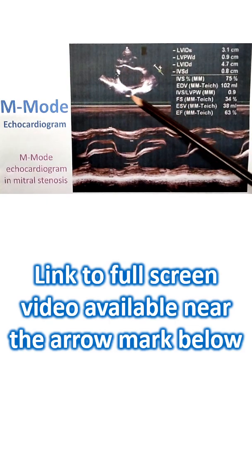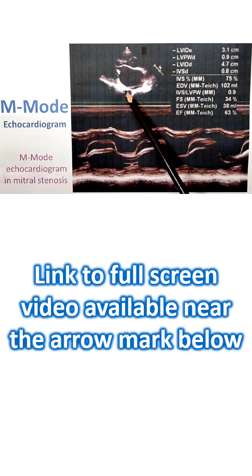This is cross section of descending aorta, and a portion of the coronary sinus is probably seen here. So in M-mode, this is the flattening of the EF slope, thickening of both leaflets.